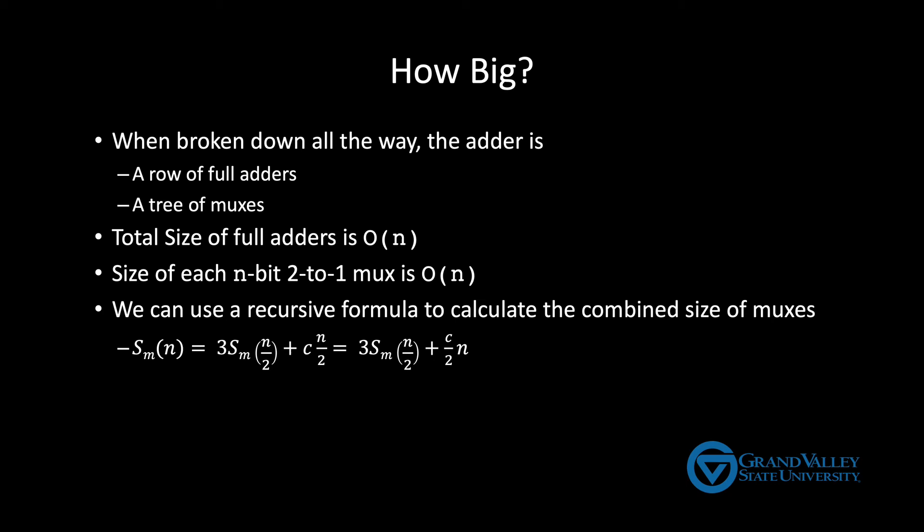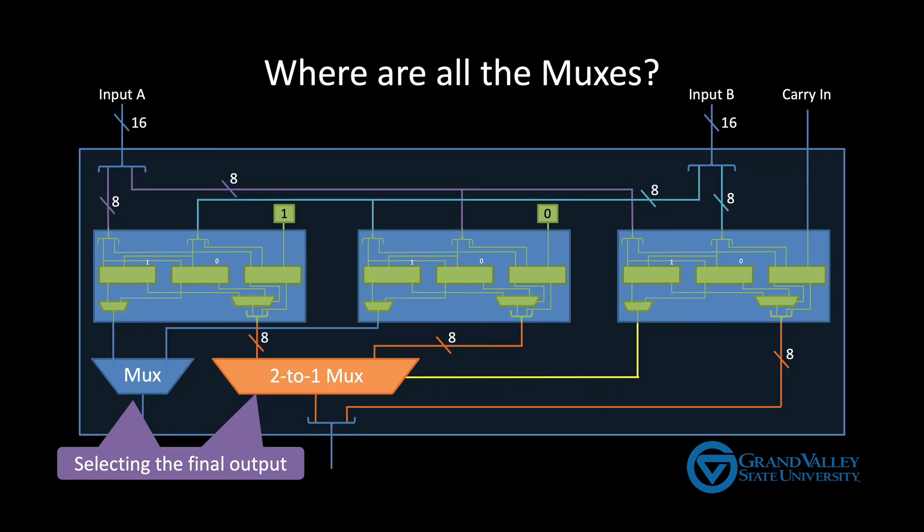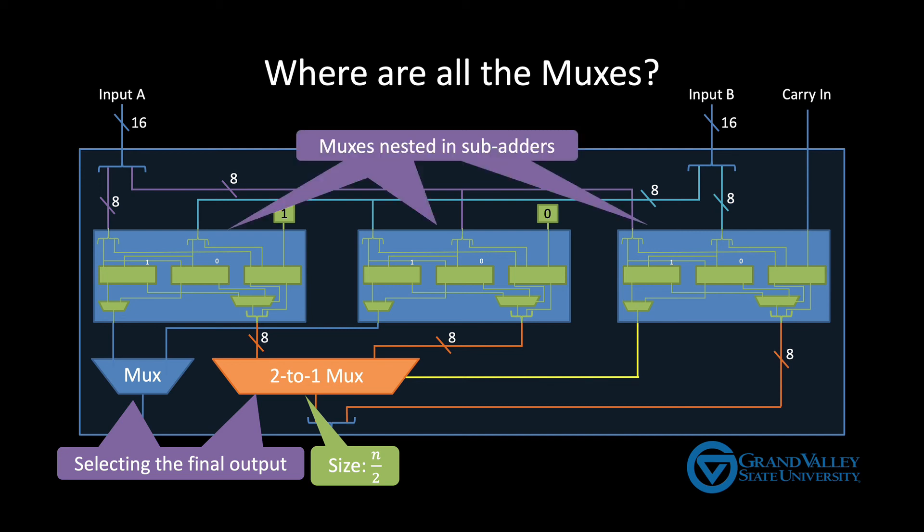Okay so to see where this formula comes from, let's go back and look at the adder for a minute. The two obvious MUXs are the ones at the bottom that select the output. Remember however that we only need to select the bits for the top half of the output so the size of the orange MUXs is not N but N over 2. In a 16-bit adder only the top 8 bits go through that MUXs. The remaining MUXs we need to count are nested inside of the three sub adders and each of these sub adders has a size of N over 2. Again if we're building a 16-bit adder, the sub adders are just 8-bit adders.